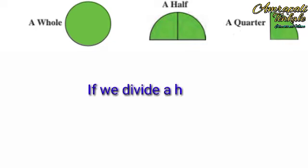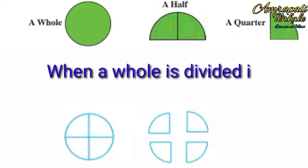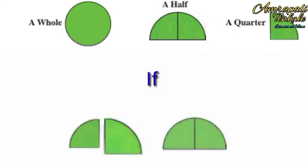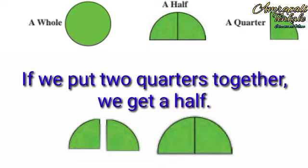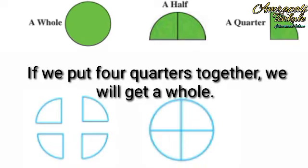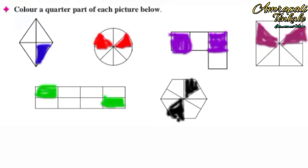If we divide a half into halves again, we get two quarters. We have seen already that when a whole is divided into four equal parts we get a quarter. If we put two quarters together we get a half. Similarly, if we put four quarters together we will get a whole. Color a quarter part of each picture below. A quarter means when something is divided into four equal parts, each of the parts is a quarter of that thing.